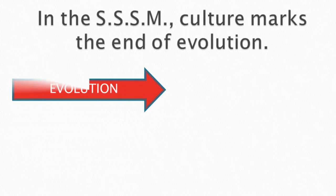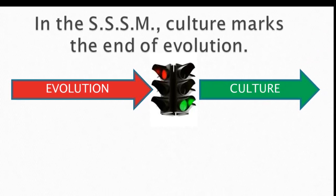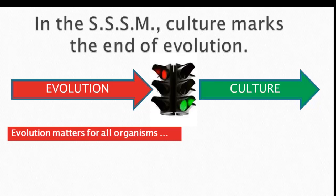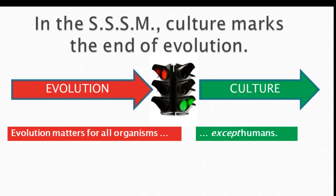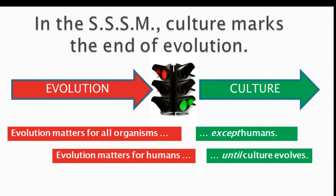In the standard social science model, culture marks the end of evolution — evolution happens, then it hits a red light when culture begins and culture gets the green light. Most social scientists would agree that evolution matters for all living things, but they exclude humans when explaining behavior. We may need evolutionary models to explain badgers and billy goats, but not humans, because culture explains that. Evolution mattered for humans, but only until culture evolved — once culture evolved, we can ignore evolution.